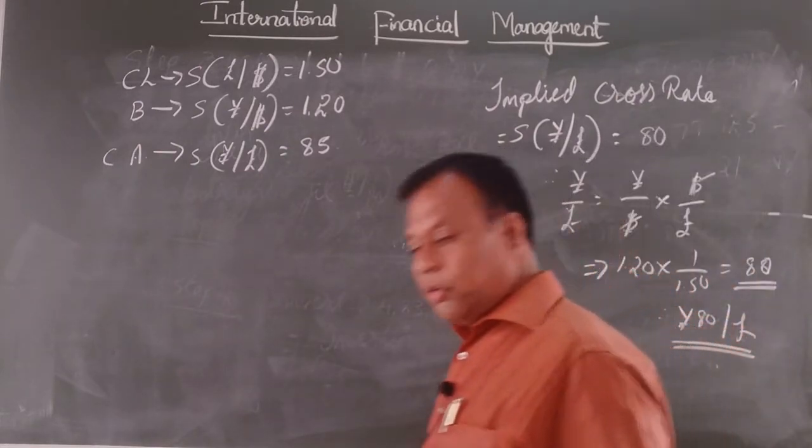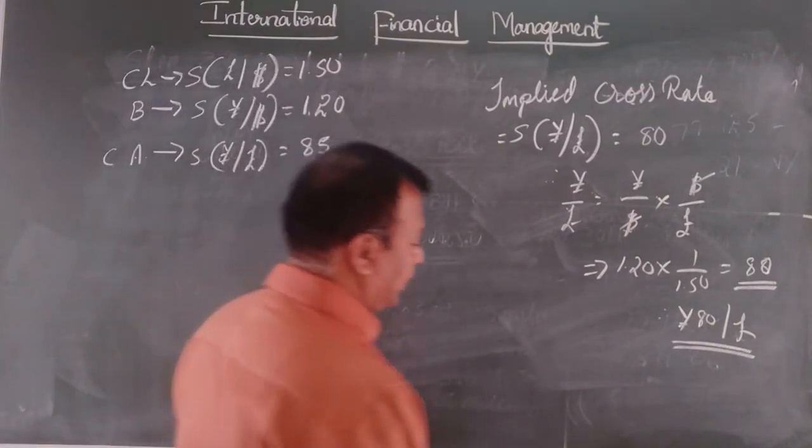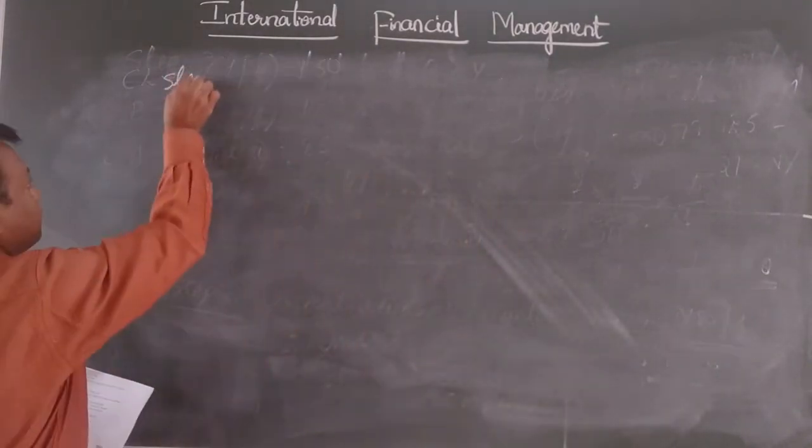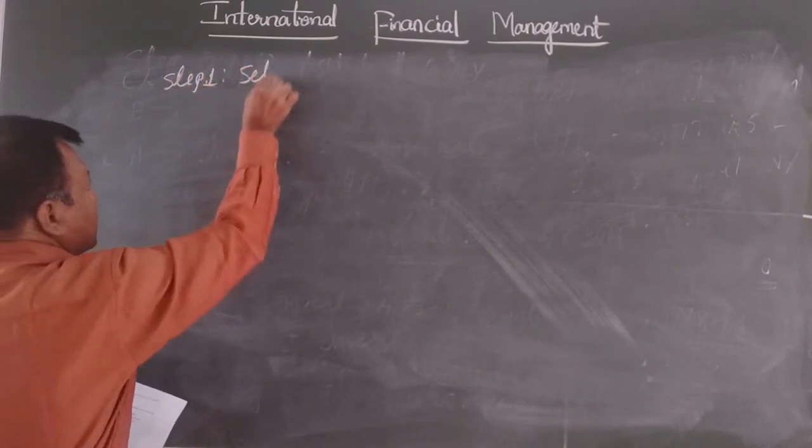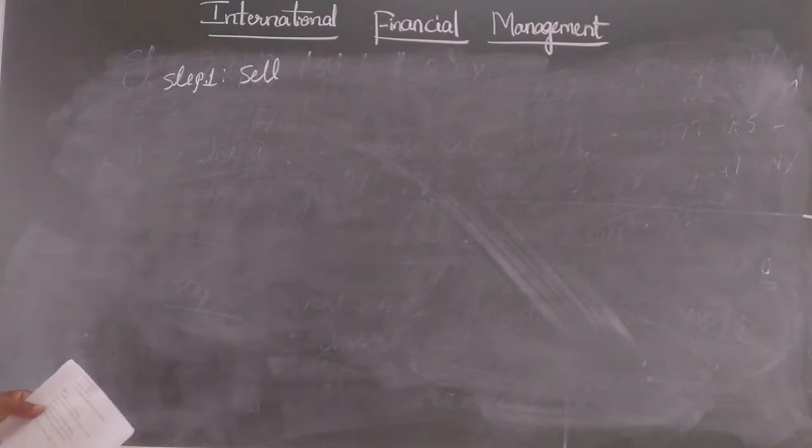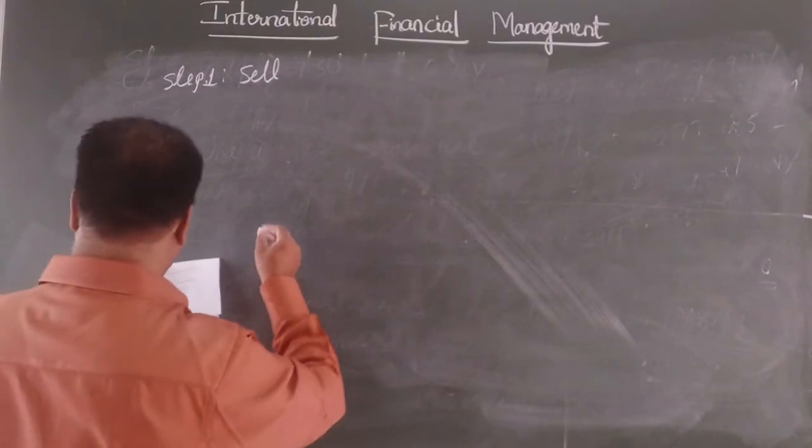That means 80 yen per pound. So we came to know that there is an arbitrage possibility. Let us try to understand how we can take advantage of the situation.